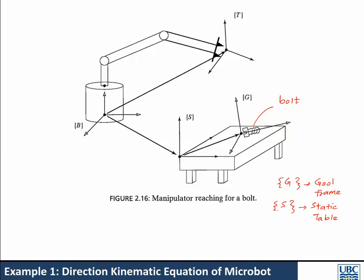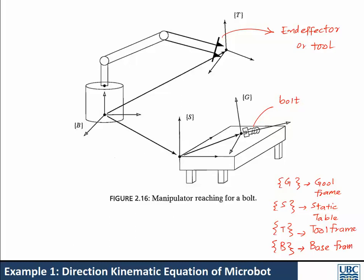The end of the robotic arm is also called an end effector or a tool, and the frame assigned to it is called the tool frame. There is also a frame assigned to the base of the robot — the base frame. Every frame has three axes; for example, X, Y, and Z of the base frame follow the right-hand rule.